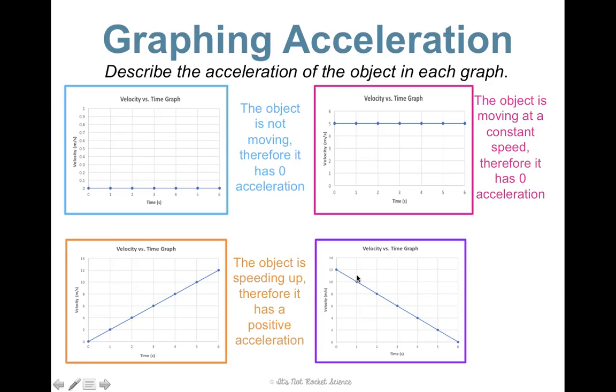Here we see twelve, and then ten, eight, six, four, two, zero. So this would be an object that's slowing down, so it has a negative acceleration.